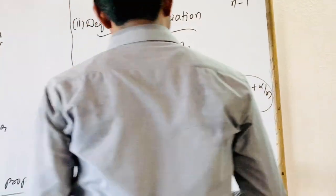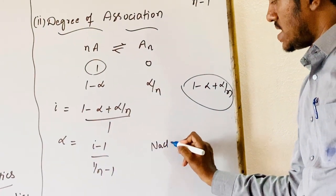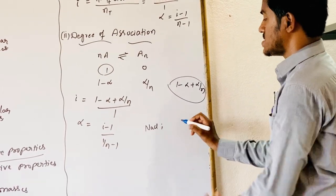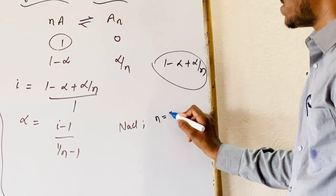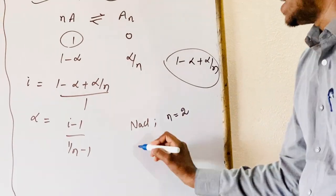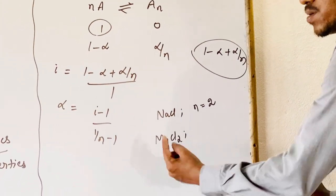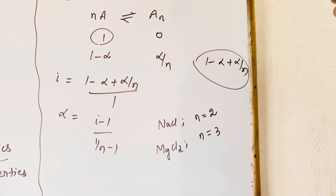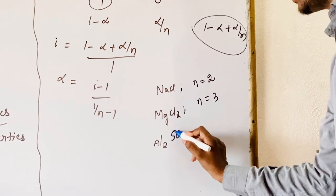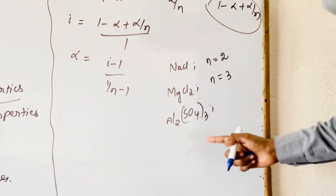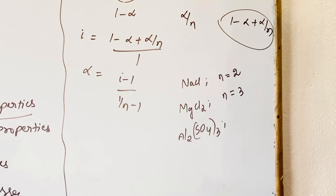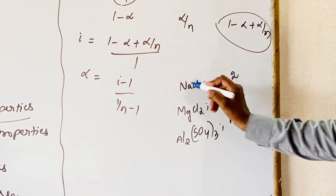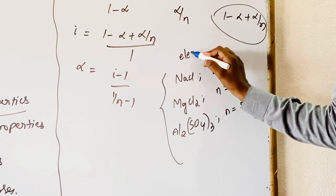For example, taking NaCl: 1 mole of NaCl dissociates into 1 sodium ion and 1 chloride ion, giving 1 plus 1 equals 2 moles. So n equals 2. Taking MgCl2: 1 magnesium ion and 2 chloride ions, so 1 plus 2 equals 3 moles. Taking aluminium sulfate Al2(SO4)3: 2 aluminium ions and 3 sulfate ions, so 2 plus 3 equals 5 moles. All these are ionic compounds that behave as good electrolytes.